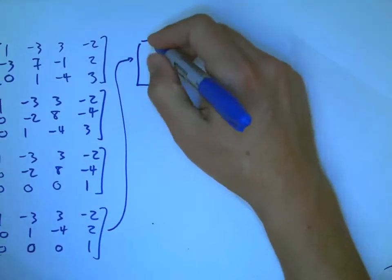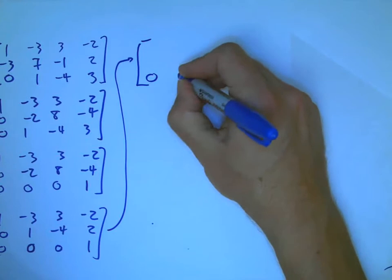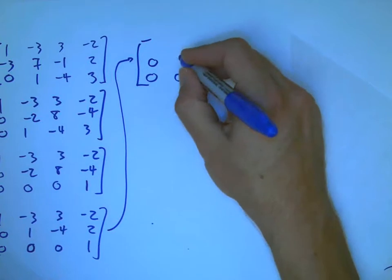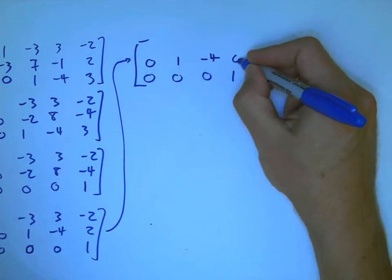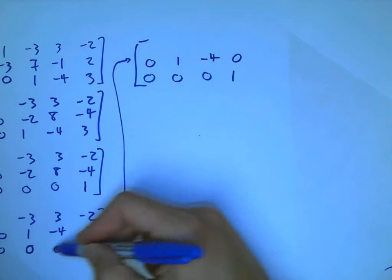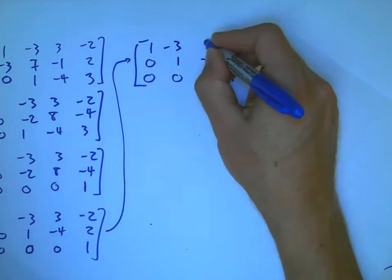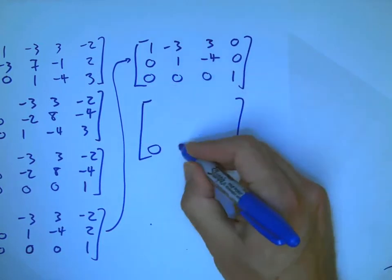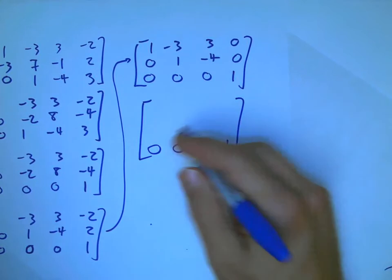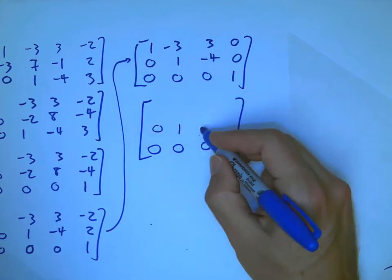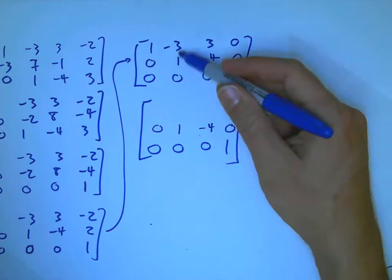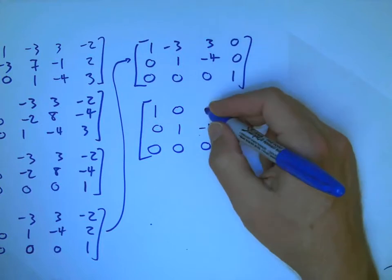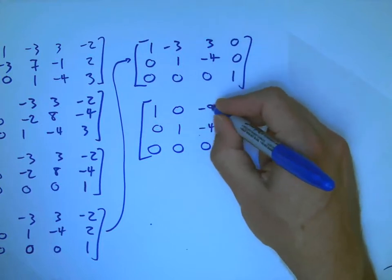I'm going to go from the bottom. Now I can use that one to kill everything above it. And the great thing about zero, zero, one is that it doesn't change anything else — I don't have to do any calculations at all. Now I'm almost done. Bottom is locked in; it's in reduced form. This is as good as it's going to get. And then I just need to kill that three — I'm going to add three times the second row to the top row. And so, three plus minus twelve is minus nine, zero. Hopefully I didn't make any mistakes in the calculations.